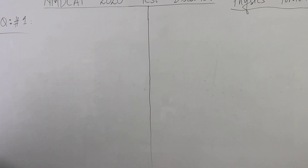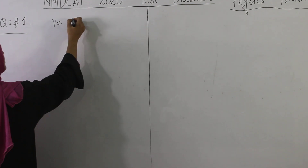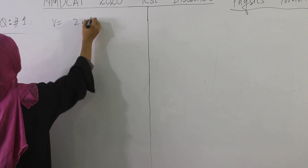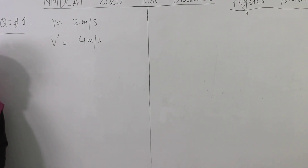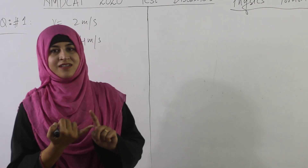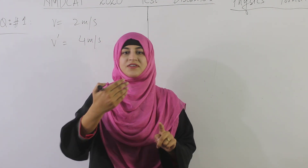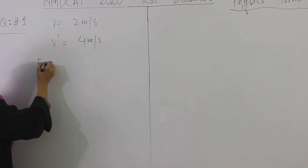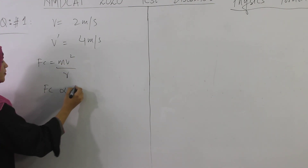Suppose you have a tangential velocity of 2 meters per second, and the new velocity is 4 meters per second — so it has doubled. What effect will this have on centripetal force? Will it halve, double, increase four times, or become one fourth? The formula is: Fc = mv²/r, so Fc is directly proportional to v².